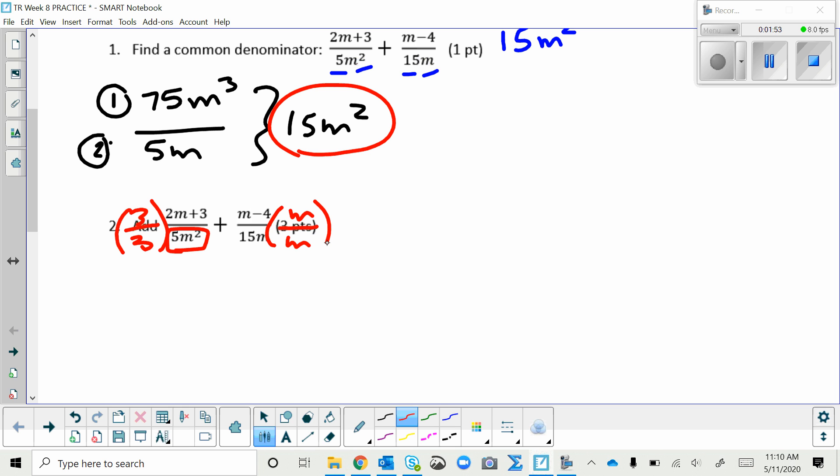So then we multiply on each of those separate fractions. You multiply across the top and bottom. That means distribute a 3 here. That gives me 6m plus 9 over, and then the 15m squared, the common denominator, plus, and then distribute this m through, gives me m squared minus 4m over 15m squared.